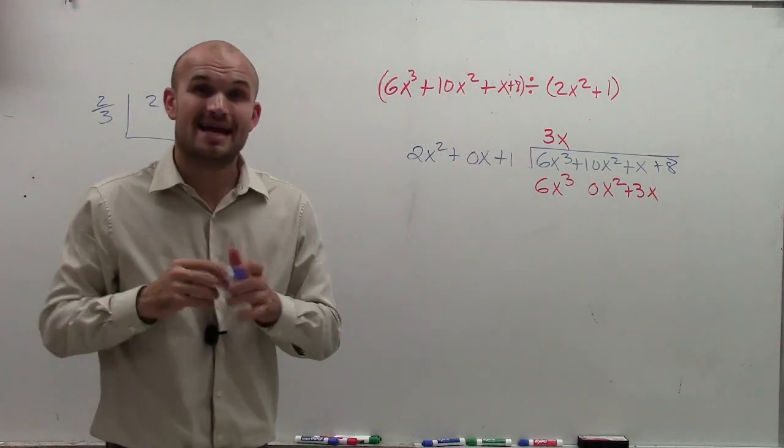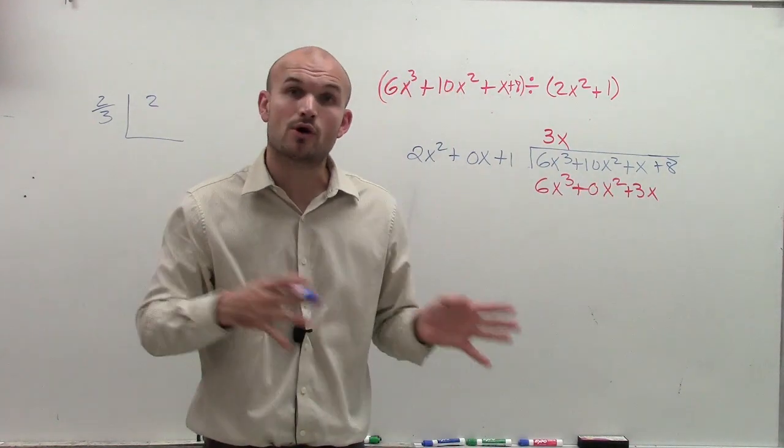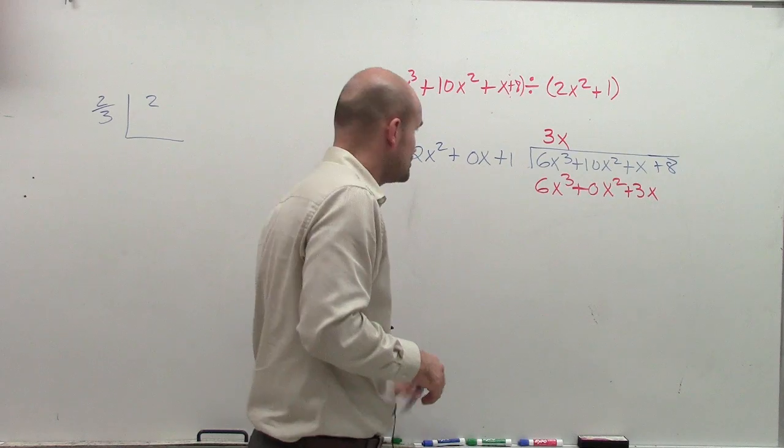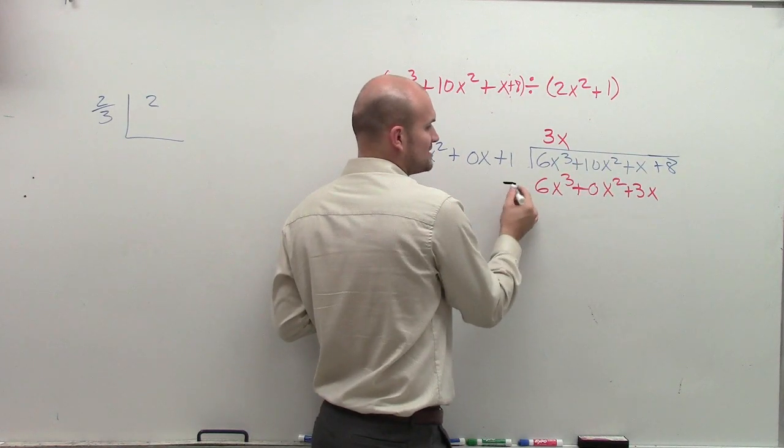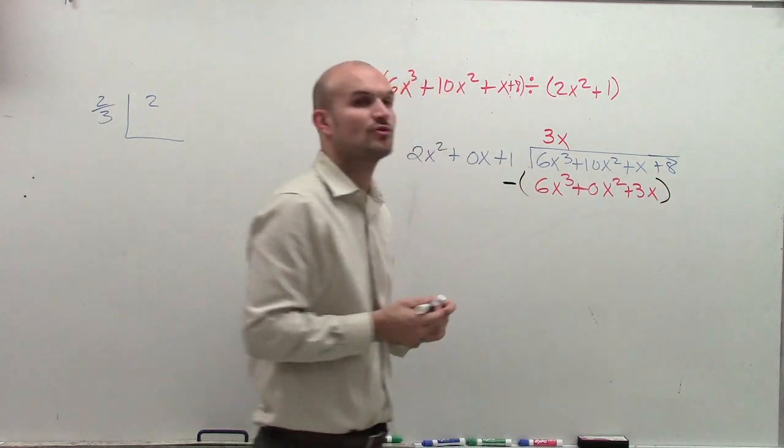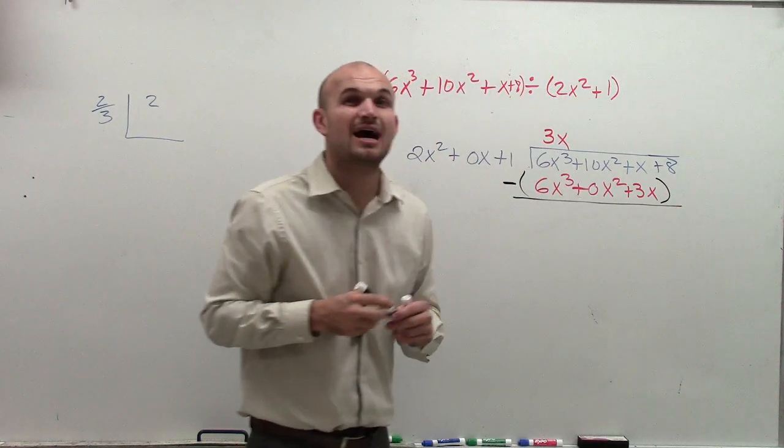Now, the next thing I need to do is remember you've got to subtract one row from the next. So to do that, the easiest way I can tell you to do that is rewrite the next row, take a subtraction sign, and then put everything on the bottom in parentheses. And then when you do this, make sure you say it out loud.